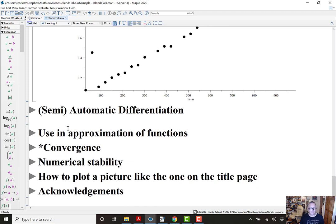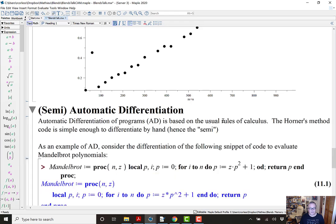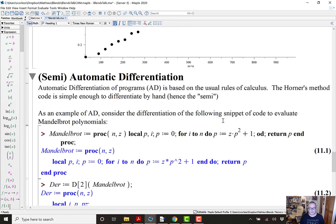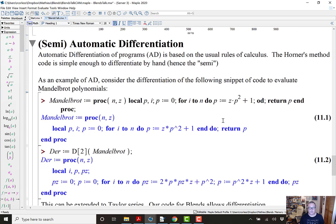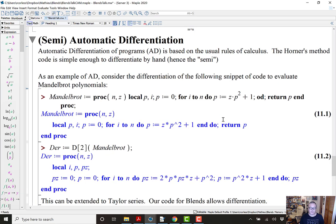I mentioned differentiation. If you have a function which evaluates something numerically, you very frequently want the derivative. So, how do we get derivatives out of this? Automatic differentiation of programs is very well developed science now. And, it's based on the usual rules of calculus. And, Maple can do that. Horner's method code that we have written for this is actually simple enough so that we don't need to call Maple to differentiate it. We can write the code that provides the derivatives by hand. And, so it's actually semi-automatic differentiation. But, we use the same technique.